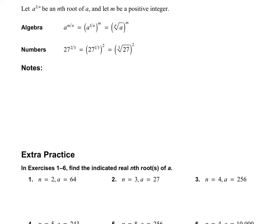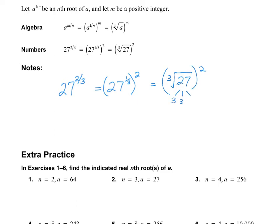Once in a while you're going to run across a fractional exponent, and what this fractional exponent does is change it into a radical. For example, 27 to the power of 2 thirds is the same as 27 to the power of 1 third, all to the power of 2. Whenever you see a 1 third, this will turn into a radical — so it's the third root of 27, squared. The third root of 27 is 3, because 3 times 3 times 3 is 27. So this turns into 3 squared, and the final answer is 9. That means 27 to the power of 2 thirds equals 9.